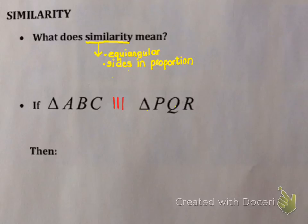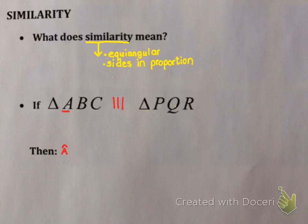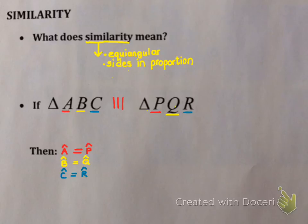Let's quickly remind ourselves of the symbols. Three vertical lines mean similar. So if triangle ABC is similar to triangle PQR, you can tell a number of things. First, they're equi-angular, so angle A equals angle P, angle B equals angle Q, and angle C equals angle R. The order is very important when writing out your triangles. Every angle in one triangle has an equal partner in the other — they're not all equal, but every angle has an equal partner.